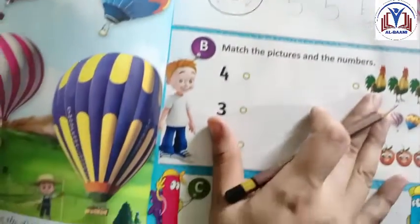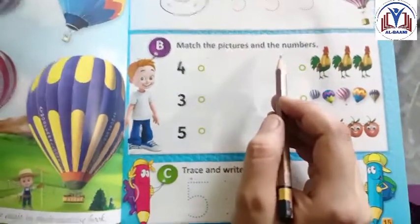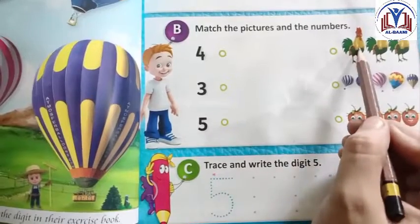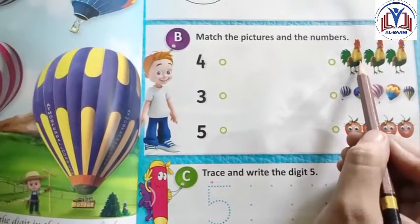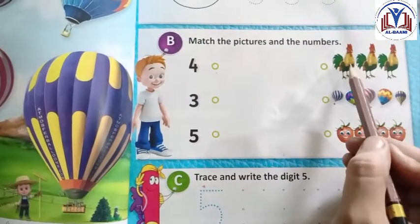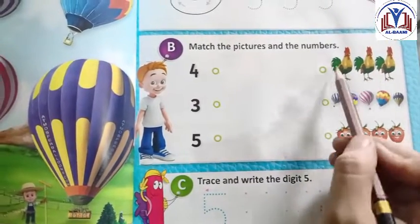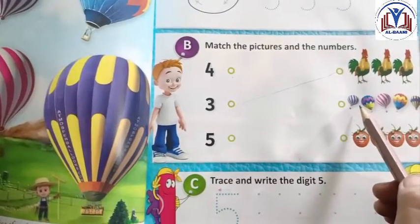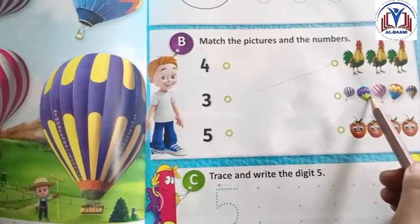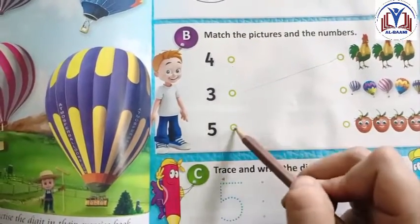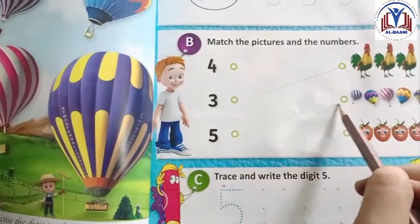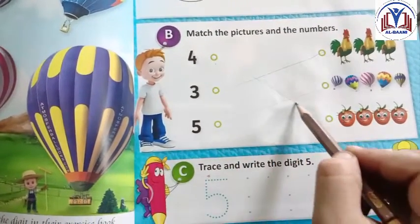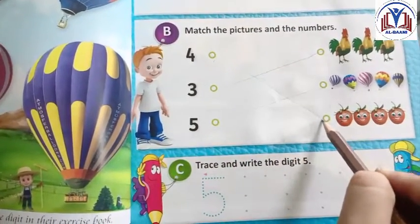Okay. Next part is match the picture and the number. Count first. Hands: 1, 2, 3 — match to 3. Next is hot air balloons: 1, 2, 3, 4, 5 — match to 5. Next: 1, 2, 3, 4 — match to 4.